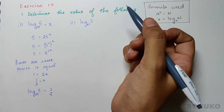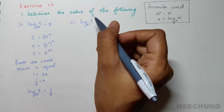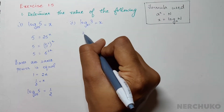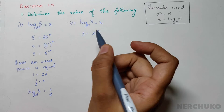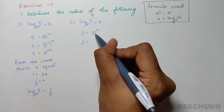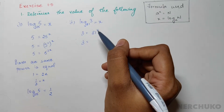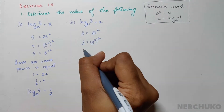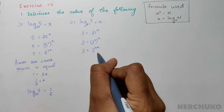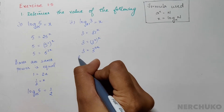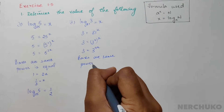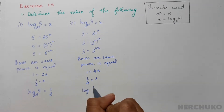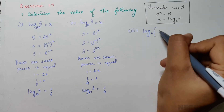We let log 3 to base 81 equal x, and applying exponential to logarithm conversion we have 3 equal to 81 to the power x. 81 can be written as 3 to the power 4, since 3×3=9, 9×3=27, and 27×3=81. So 3 to the power 4, whole to the power x, gives 3 equals 3 to the power 4x. Since the bases are the same, 1 equals 4x, so x equals 1 by 4. Therefore log 3 to base 81 equals 1 by 4. For the third bit we have log of 1/16 to base 2.